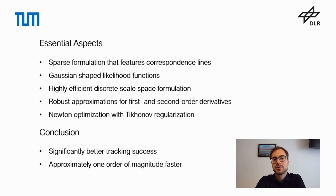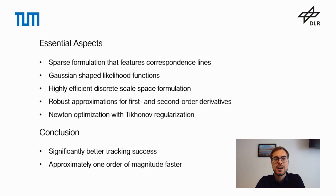In summary, the essential aspects of our algorithm are: a sparse formulation that features correspondence lines, a likelihood function for which we can prove mathematically that it follows a Gaussian distribution, a highly efficient discrete scale space formulation that considers correspondence lines at multiple scales, and robust approximations for first and second order derivatives used in a Newton optimization with regularization. In conclusion, this gives us an approach that performs significantly better than the current state of the art in terms of tracking success by being more than one order of magnitude faster. For more details, please check the paper and also our source code, which we made publicly available. Thank you very much for listening.